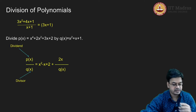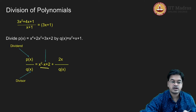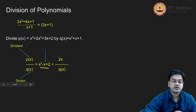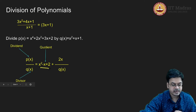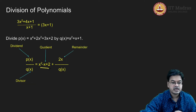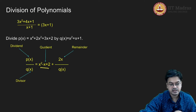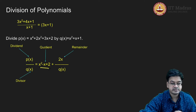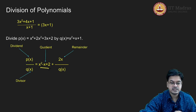The term that you get here is called the quotient, and the 2x that you have got is called the remainder. Remember, you will declare something as a remainder only when the degree of the denominator is higher than the degree of the numerator. This is the strategy that we will follow.